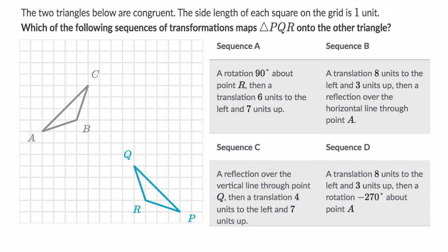Now let's do this together. Let's first think about sequence A. We're starting with triangle PQR. First it says a rotation 90 degrees about point R. To think about it: a line going one way rotates to go another way. R is going to stay where it is since we're rotating about it. To go from R to P, we went down one and three to the right. After the rotation, we go to the right one and then up three, so P is going to be there.